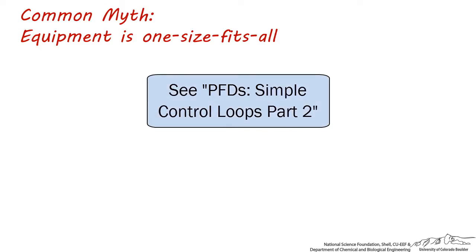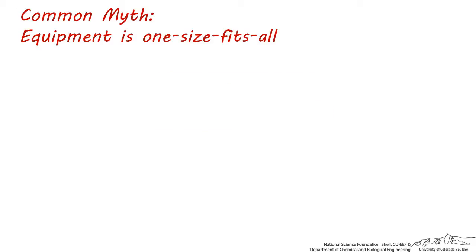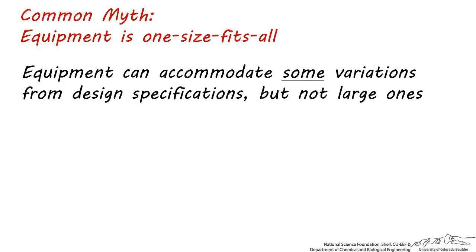In the previous lecture, we learned that process equipment is not one-size-fits-all and cannot arbitrarily adjust to any flow rate. Equipment is custom-made for specific flow rates, temperatures, and pressures, which means while equipment can accommodate some variations, it cannot accommodate any flow rate, temperature, pressure, or concentration and produce the same products.